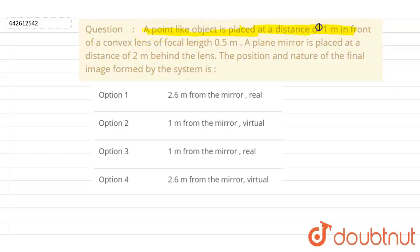A point-like object is placed at a distance of one meter in front of a convex lens of focal length 0.5 meter. A plane mirror is placed at a distance of two meters behind the lens. The position and nature of the final image formed by the system is: